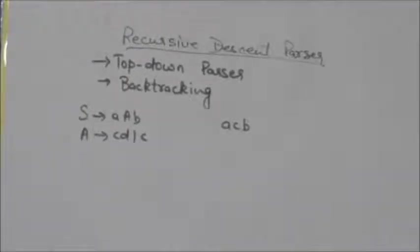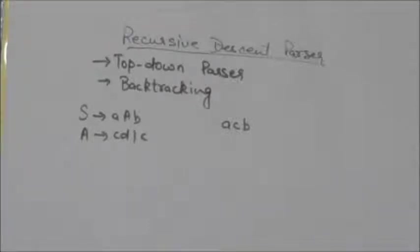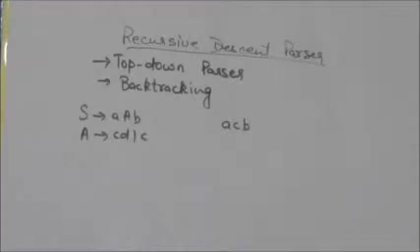The recursive descent parser does syntax analysis of a given input string. It tries to find the leftmost derivation of the given input string. If the leftmost derivation is found, it means the given input string is syntactically correct. Finding the leftmost derivation of a given input string is equivalent to constructing the parse tree for that string.